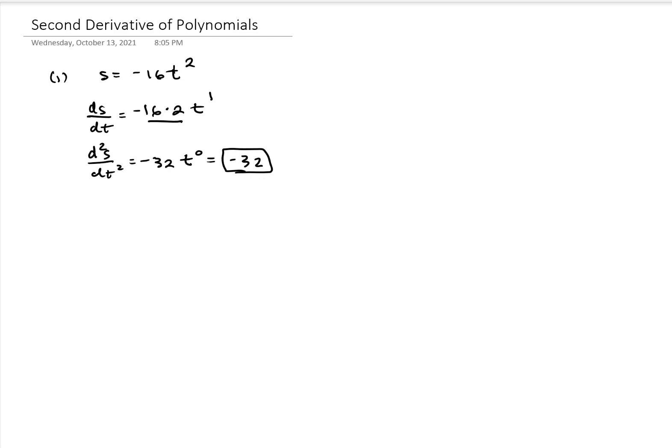Let us consider the next example number 2. It's similar to the first one. We have minus 16t squared, but we had another term 100t. So again, we take ds/dt is minus 32t.